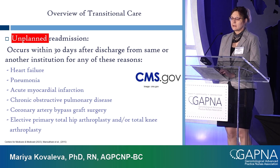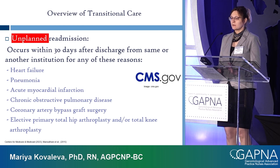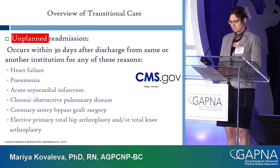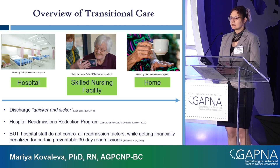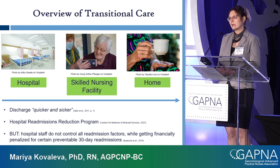That program penalizes hospitals for certain unplanned readmissions for the following reasons: heart failure, pneumonia, MI, COPD, coronary artery bypass graft surgery, and total hip or knee arthroplasty. If a person gets readmitted for something that could have been prevented, the hospital is financially penalized. This contrasts with the impetus on hospitals to discharge patients, as one author put it, quicker and sicker.